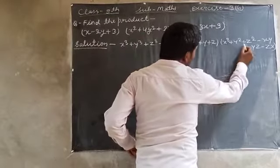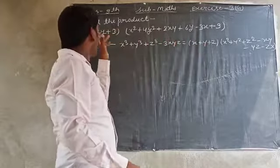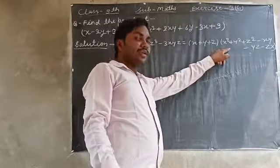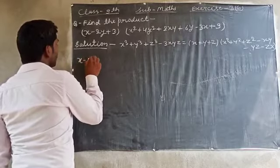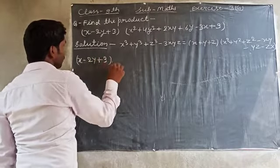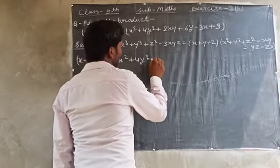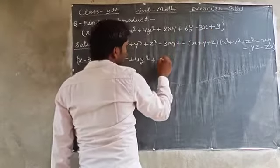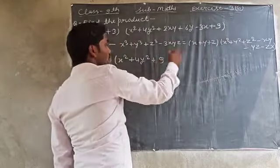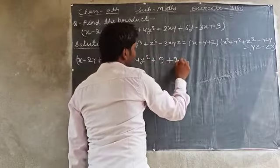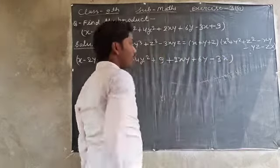First, let us look at the question. The question is in the form of the second portion of the formula. We will convert the question into this form. Our question is (x − 2y + 3) times (x² + 4y² + 9 + 2xy + 6y − 3x), where we write 9 because the question is in the form of x² + y² + z².